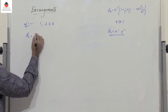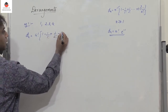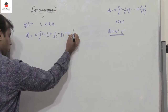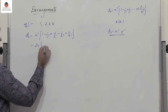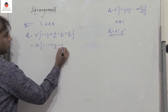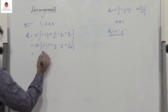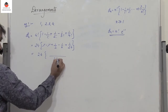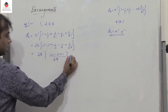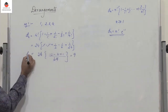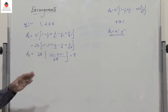Find the derangements for 1, 2, 3, and 4. According to the formula, D4 equals 4 factorial times (1 minus 1 by 1 factorial plus 1 by 2 factorial minus 1 by 3 factorial plus 1 by 4 factorial). So 4 factorial is 24. The 1 and −1 cancel, leaving 24 times (1/2 − 1/6 + 1/24). Taking LCM 24, we get 12 − 4 + 1 = 9. So D4 is 9.